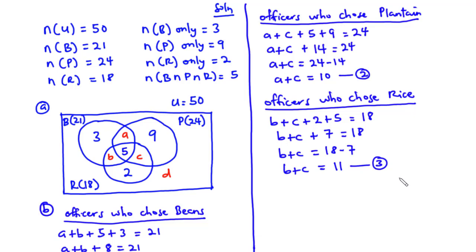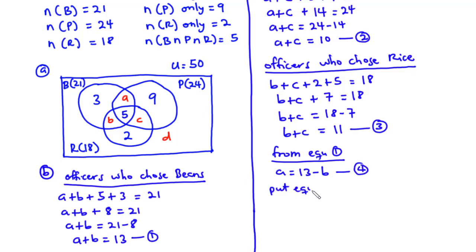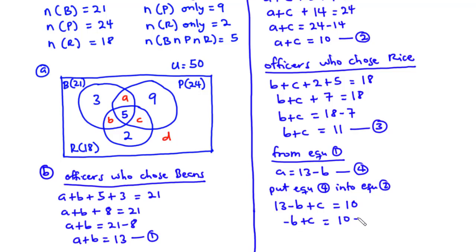We now have 3 equations with 3 unknowns. From equation 1, we make A the subject: A equals 13 minus B. Call this equation 4. Substituting equation 4 into equation 2: 13 minus B plus C equals 10, so negative B plus C equals negative 3. Call this equation 5.